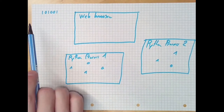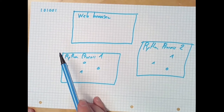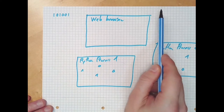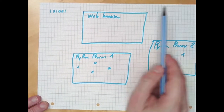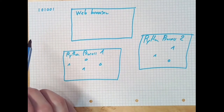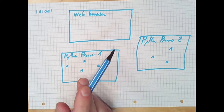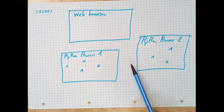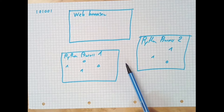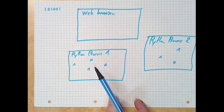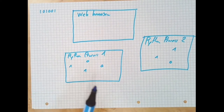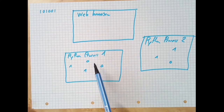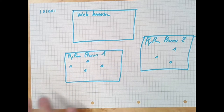Each memory cell has an address. The upper left-hand corner starts with address number 1, the second cell is number 2, the third is number 3, and so on, continuing row by row. If a piece of code asks the operating system for the state of cell number one million, the operating system goes to that cell, reads whether there is a 0 or 1, and reports it back to the program. We are only concerned with how Python works, so we are now going to look inside one of these Python processes.